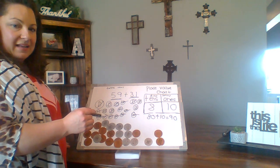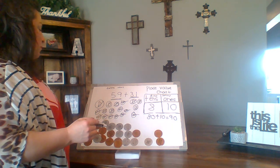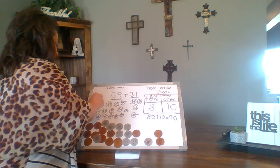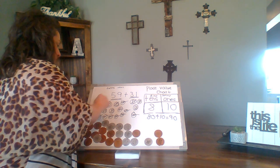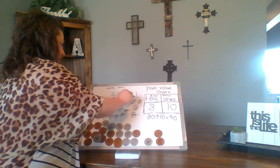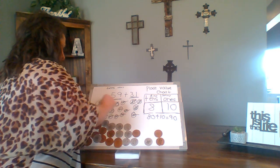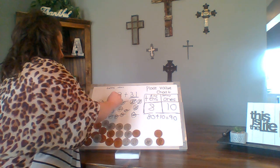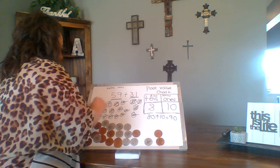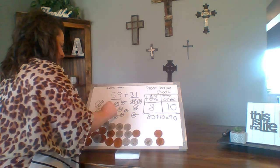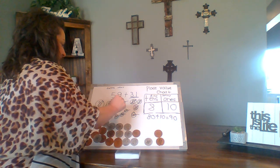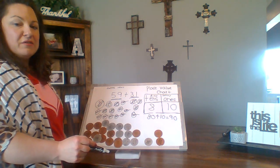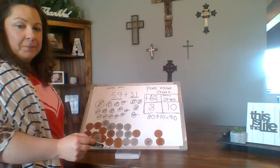Did you get that? Remember, you can always go back and count your dimes by tens: 10, 20, 30, 40, 50, 60, 70, 80 — then count on your pennies: 81, 82, 83, 84, 85, 86, 87, 88, 89, 90. You can do that if you need to as well.